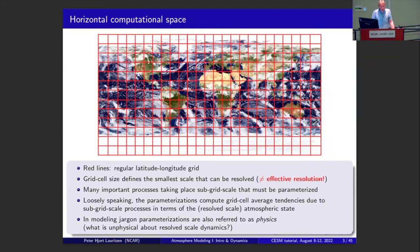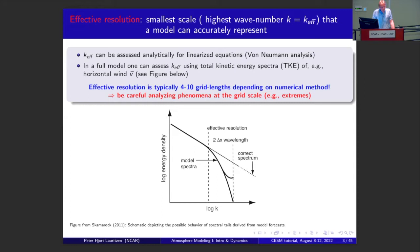As soon as you define a grid, you define the smallest scale you can explicitly resolve. We typically run 100 km grid cell models, so the smallest wave you can represent is the two-Delta-X wave — you need two grid cells — making the smallest scale 200 km. However, even though we can represent a 200 km wave on this grid, we may not represent it accurately. For those who have taken classes in numerical methods, you've probably done a von Neumann stability analysis, where you linearize the system and look at how different waves are damped or dispersed — in other words, not represented accurately.